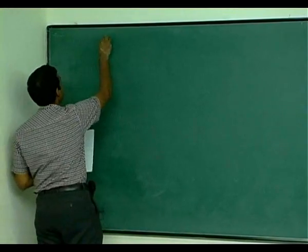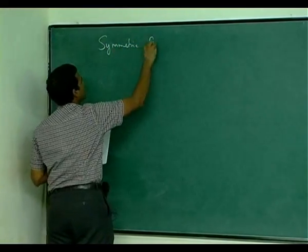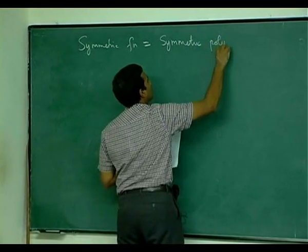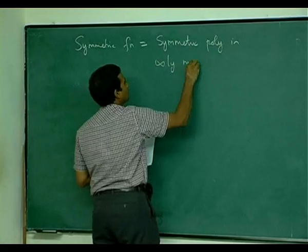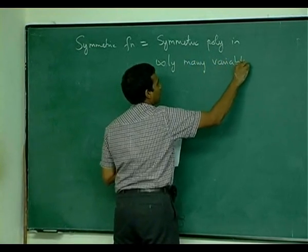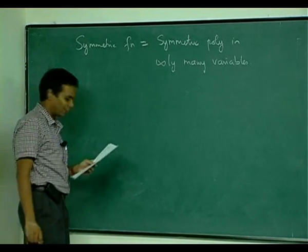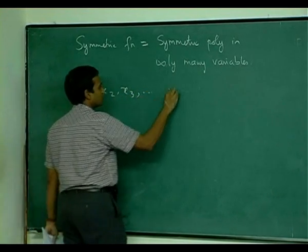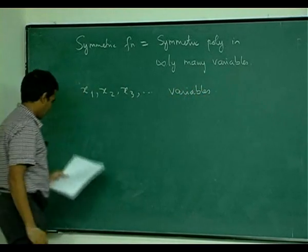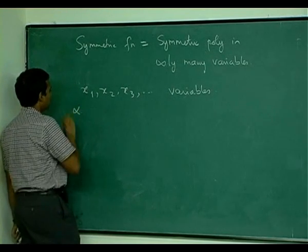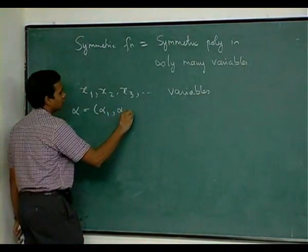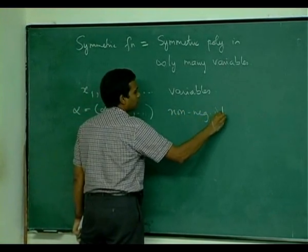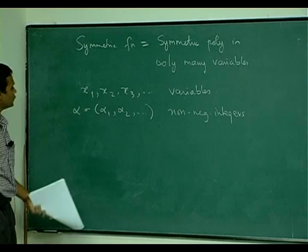When I say symmetric function today, what I really mean is a symmetric polynomial in infinitely many variables. A multi-index is just a sequence of non-negative integers of which finitely many are positive. These variables are x1, x2, x3, dot dot dot, and I look at multi-indices.